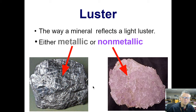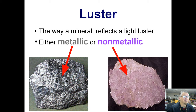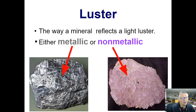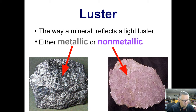Luster. We have metallic and non-metallic. Some of these can be really tricky. Metallic — does it look like a metal, or does it look like a rusted metal? If so, that would mean it's metallic. Everything else is going to be non-metallic. There are a lot of more specific non-metallic lusters like earthy and soapy.